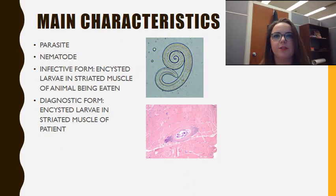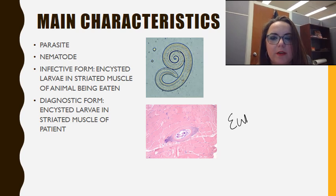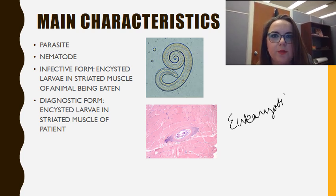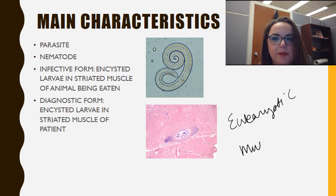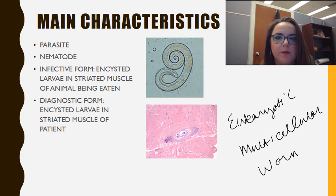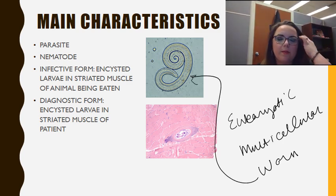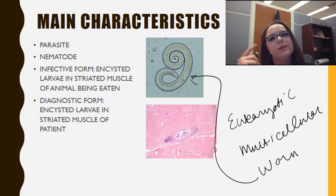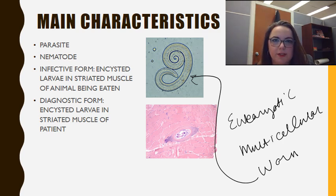Some common characteristics: first, it's a parasite, so it can live within us quite happily. Second, it's a eukaryotic organism, like many of our parasites. This one is actually a multicellular organism because it is a nematode — it's a worm, a roundworm. Like all parasites, there are two things I absolutely require you know: its infective form and its diagnostic form. In this case it's very simple, because both the infective and the diagnostic form are the same.